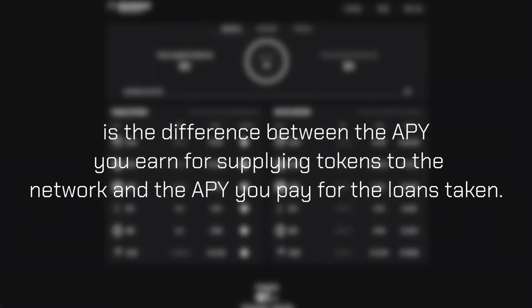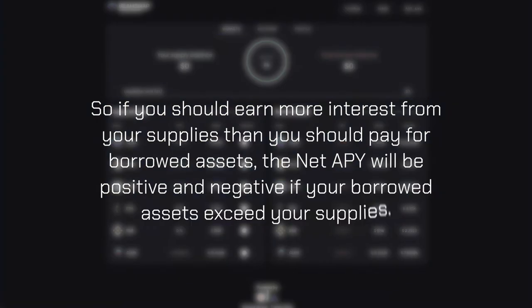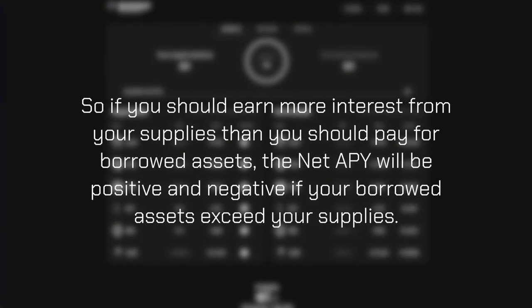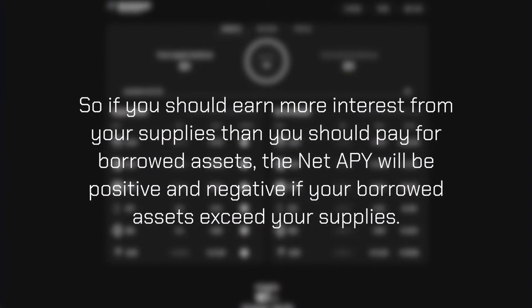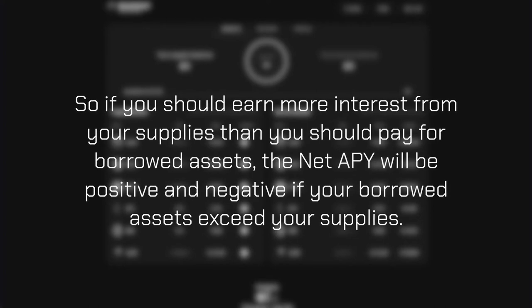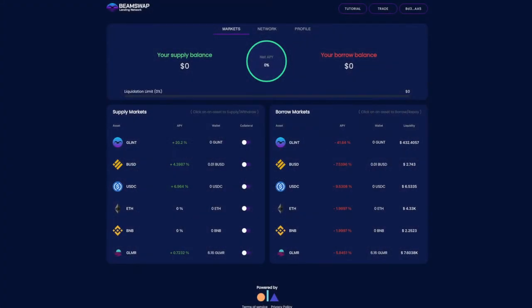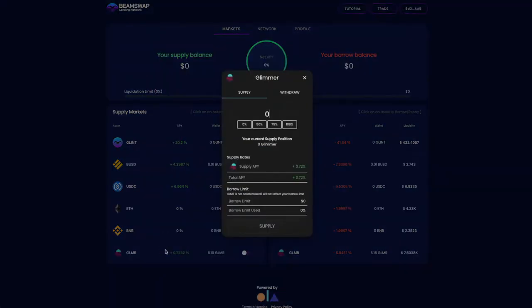The net APY rate displayed in the middle is the difference between the APY you earn for supplying tokens to the network and the APY you pay for loans taken. It will be positive if you earn more interest from supplies than you pay for borrowed assets, and negative if borrowed assets exceed your supplies. To deposit or withdraw assets, go to the Supply Markets section.